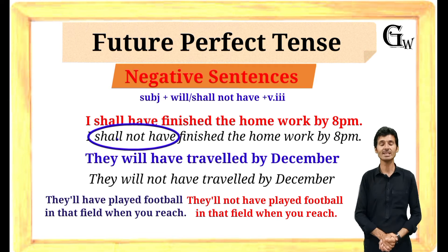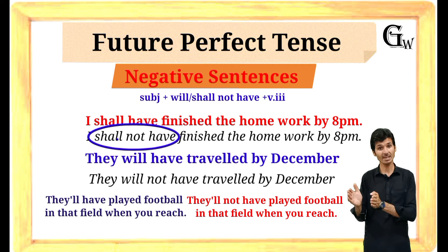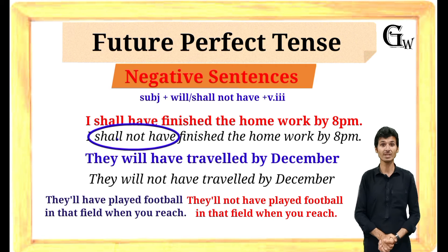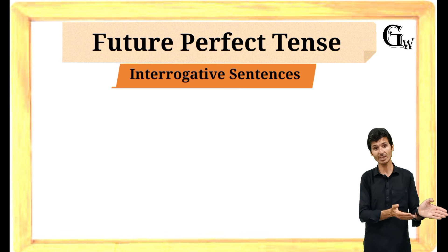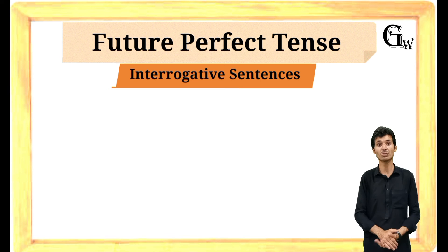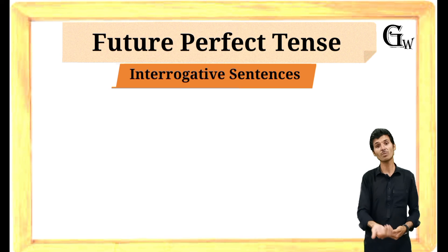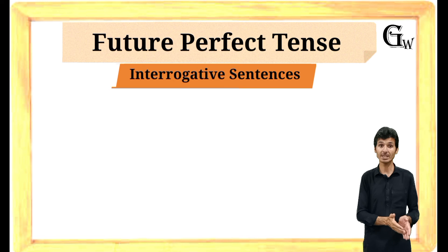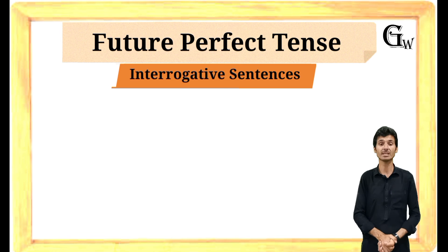Now let's move forward and learn how we form interrogative sentences. I repeat again: if you want to become a fluent speaker, use this tip. Practice making interrogative sentences and ask questions to other people. Your colleagues and fellow students who are learners — ask them questions. Your skill will develop, they will answer in affirmative, so their practice will happen too. Then they will ask you, you will answer them, and in this way your fluency can improve greatly.